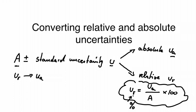So we have U_R equals U_A over A times 100. So we bring the 100 to the other side. We divide both sides by 100 and we multiply by A.